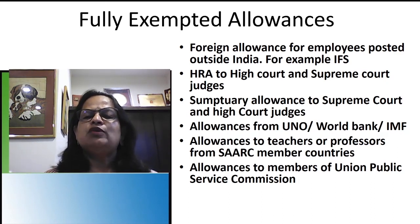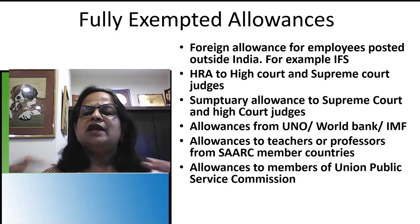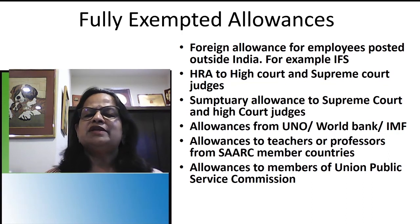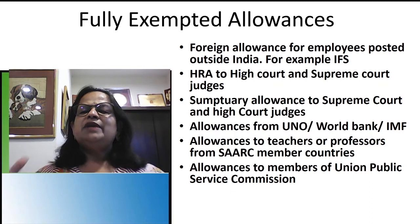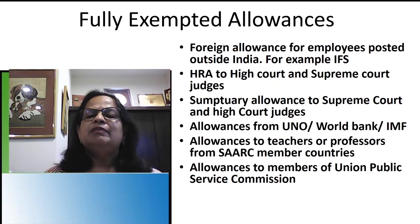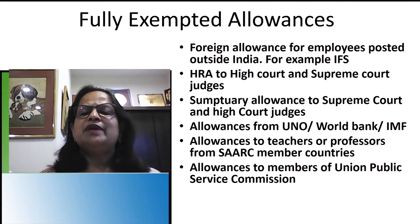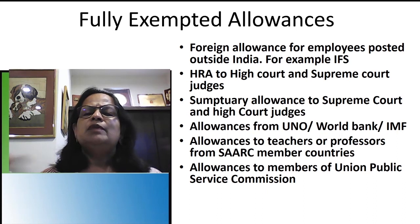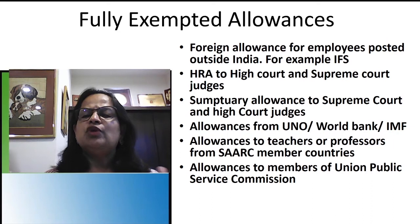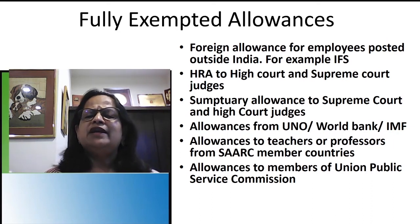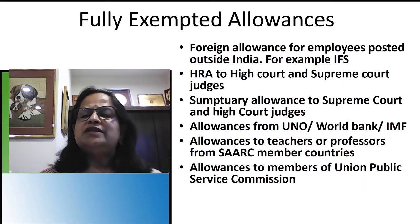Sumptuary allowances to Supreme Court and High Court judges are fully exempted. These judges receive extraordinary benefits: an orderly, a fully furnished bungalow, cooks, servants, provisions, official vehicles with diesel and petrol, uniform allowances, and ironing allowances. You can observe that they travel with police escorts and red-signal boards. All these sumptuary allowances are completely exempted from tax.